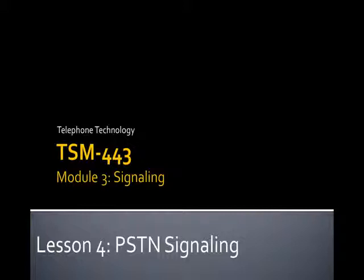In circuit switching, that doesn't happen. We're going to look a little more under the hood at that. In circuit switching, I actually build the complete path for the application — in our case, a call — and I leave that path in place for the use of that one call for the duration of the call. It doesn't matter if I'm using it or not; that bandwidth is allocated. That's just a fundamentally different way of looking at things.